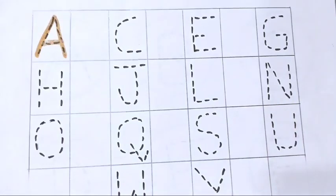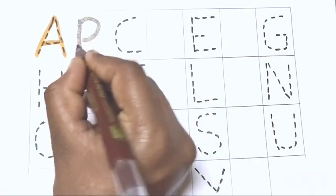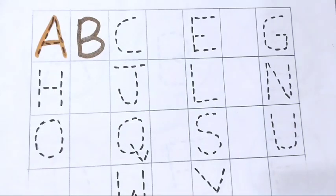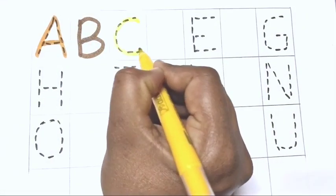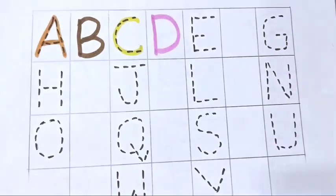A. A for apple. B. B for butterfly. C. C for cat. D. D for doll.